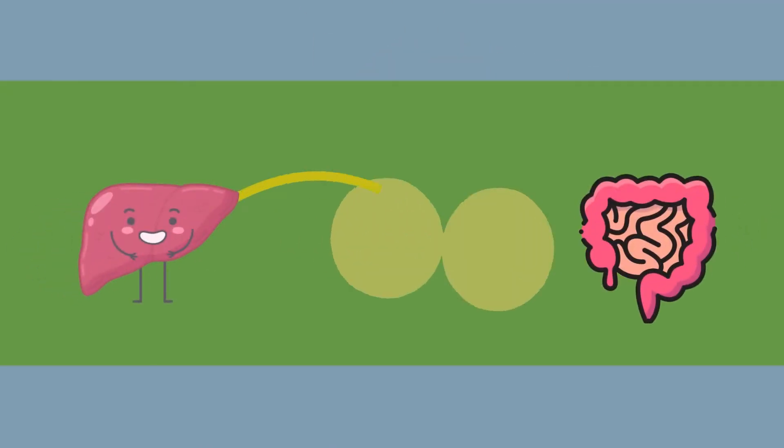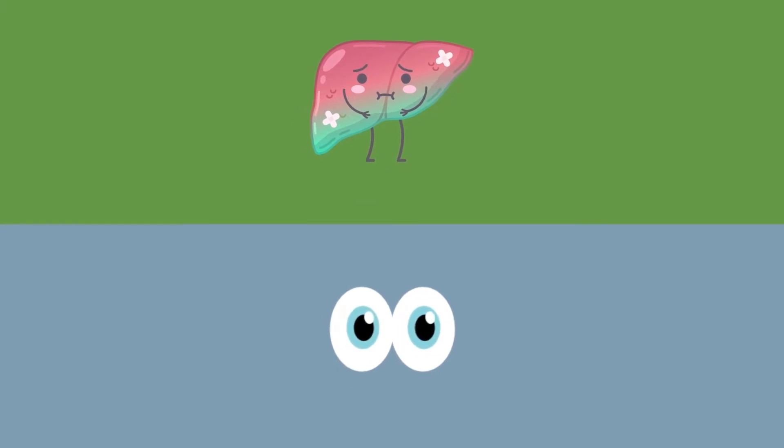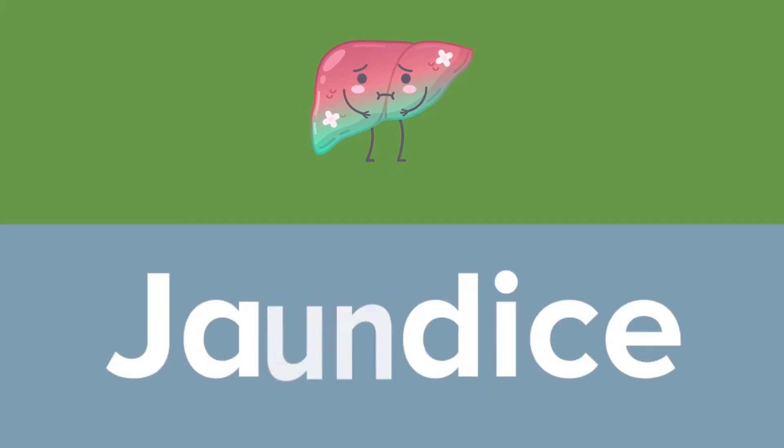The disease is caused by bile being unable to be drained from the liver. The bile buildup within the liver affects the skin and the eyes, giving them a yellow color. This is called jaundice.